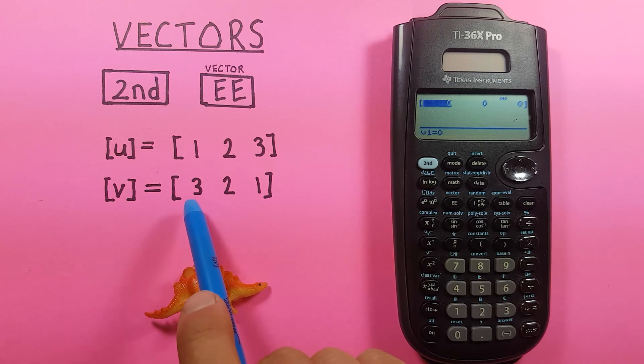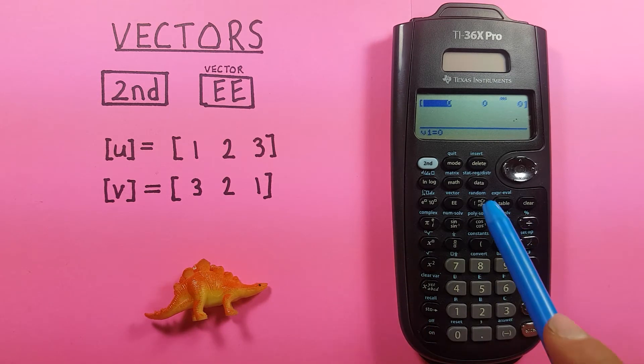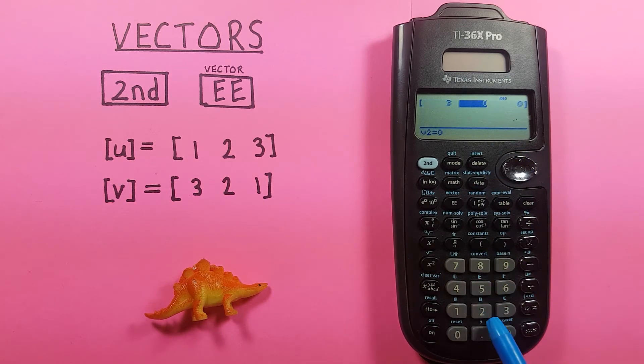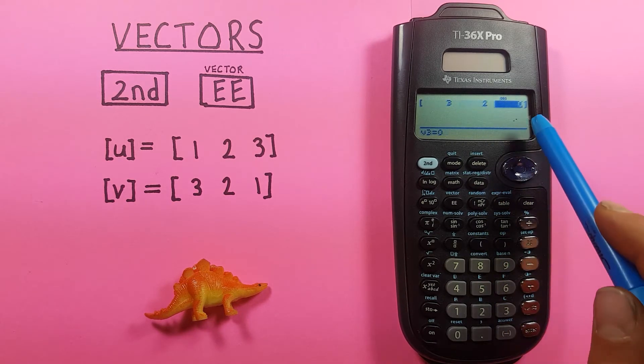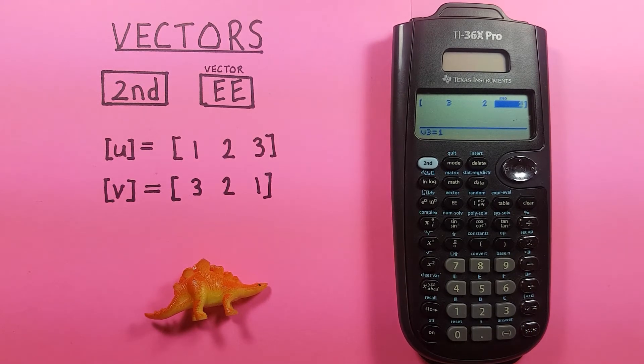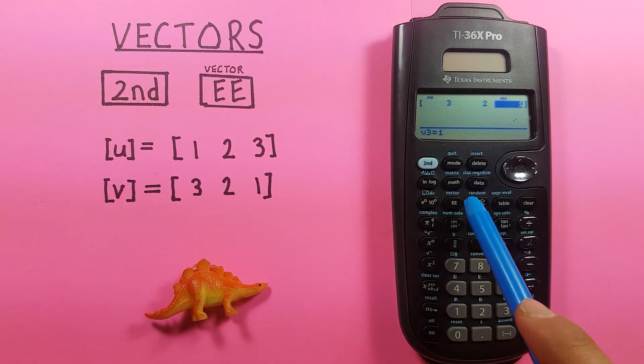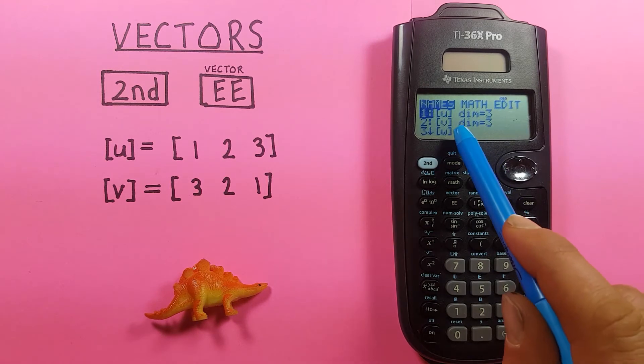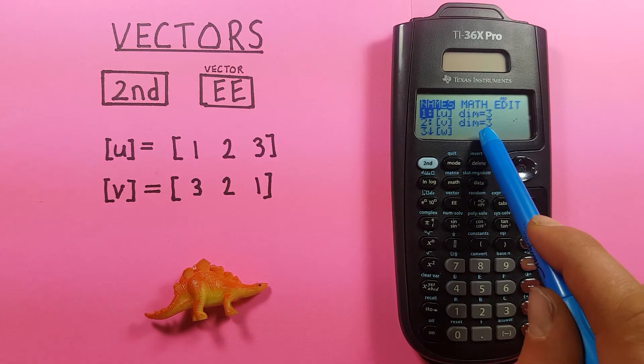And here's our V vector: 3, 2, 1. So our V1 is three. Enter. Our V2 is two. Enter. And our V3 is one. Enter. And now we can go back to our vector menu with second EE, and see we have a three-dimensional vector in our V slot.